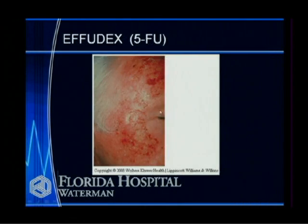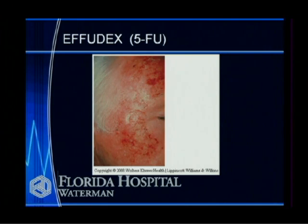This is an example of a patient treated with Effudex — 5-FU chemotherapy in a cream form. What it does is cause your skin to desquamate, becoming red, irritated, and raw. Then your skin makes new skin from the bottom up and from the sides in, and the precancerous condition goes away. It's very effective for that. You apply it typically twice a day for two weeks, and then you get a significant skin reaction.